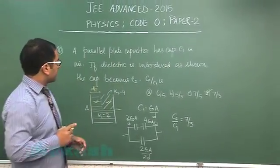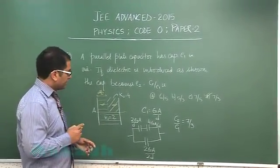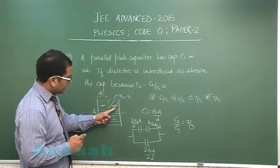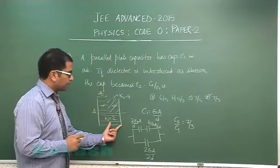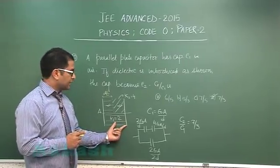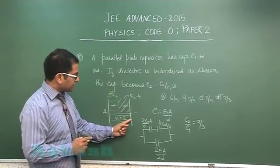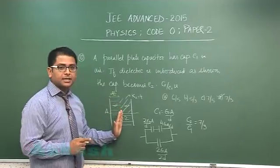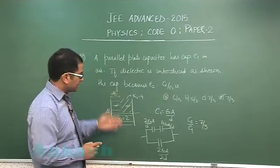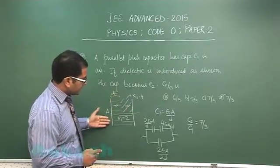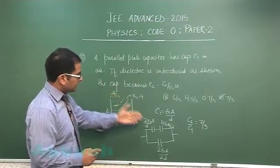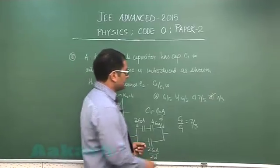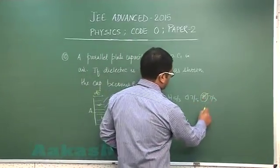One probable mistake in question number 10 is that many a time students think that this unit and this unit are in parallel if you take a half part but you cannot assert it because this and this would have same potential but this and this the interface will not be having same potential. So the best way is this and this is in series and this is one unit and these two units in parallel as we have done. So question number 10 will lead us to option D.